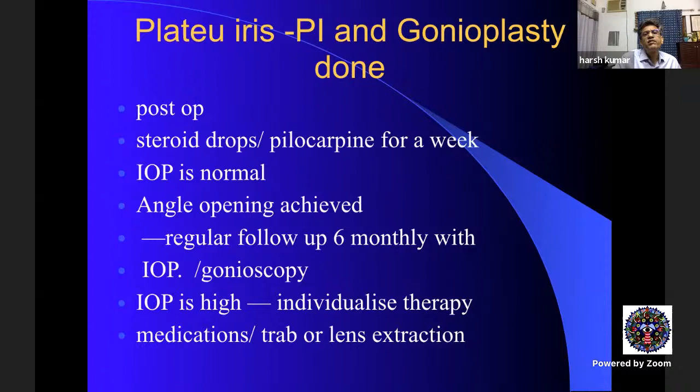Post-operatively, use steroid drops and pilocarpine pre- and post-operatively to keep the angle stretched. On follow-up gonioscopy, if IOP is normal and angles are open, follow six-monthly. If IOP is rising, add medications — and later lens extraction may be required.